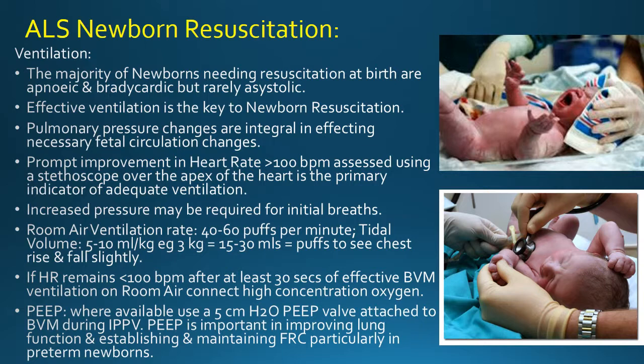Increased pressure may be required for initial breaths. Room air ventilation rate: 40 to 60 puffs per minute, tidal volume 5 to 10 mils per kilo — for a 3 kilo infant that equals 15 to 30 mils — just enough to see chest rise and fall slightly. If heart rate remains less than 100 beats per minute after at least 30 seconds of effective bag-valve-mask ventilation on room air, connect high-concentration oxygen. Where available, use a 5 cm water PEEP valve attached to the bag-valve-mask during IPPV. PEEP is important in improving lung function and establishing and maintaining functional residual capacity, particularly in preterm newborns.